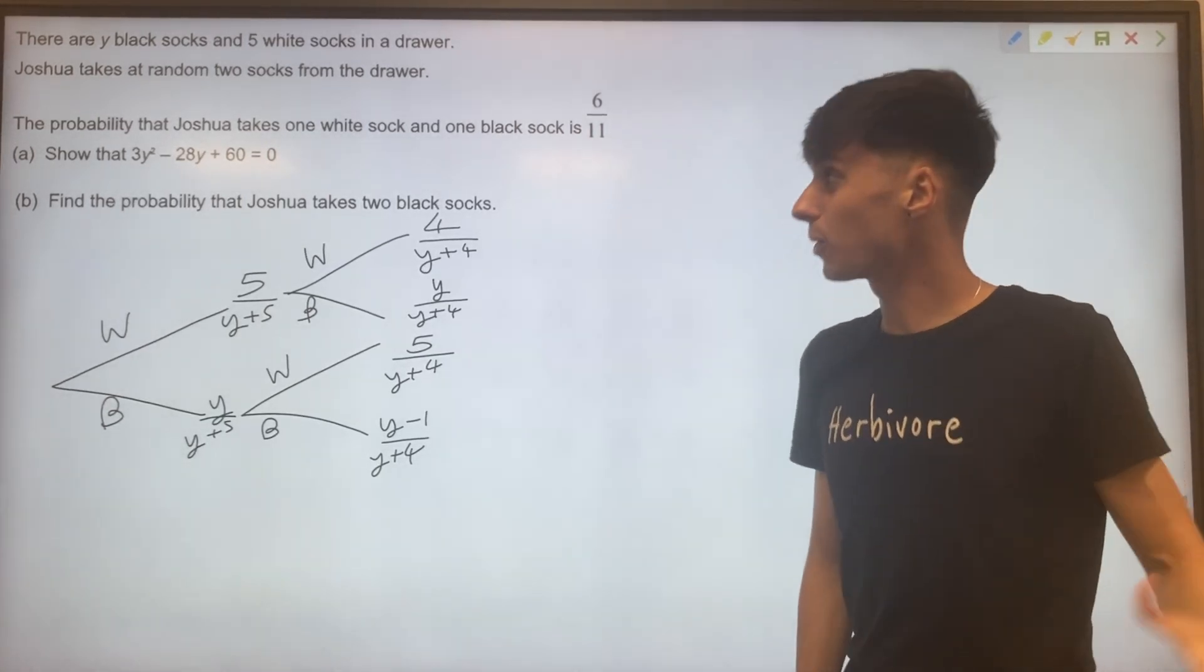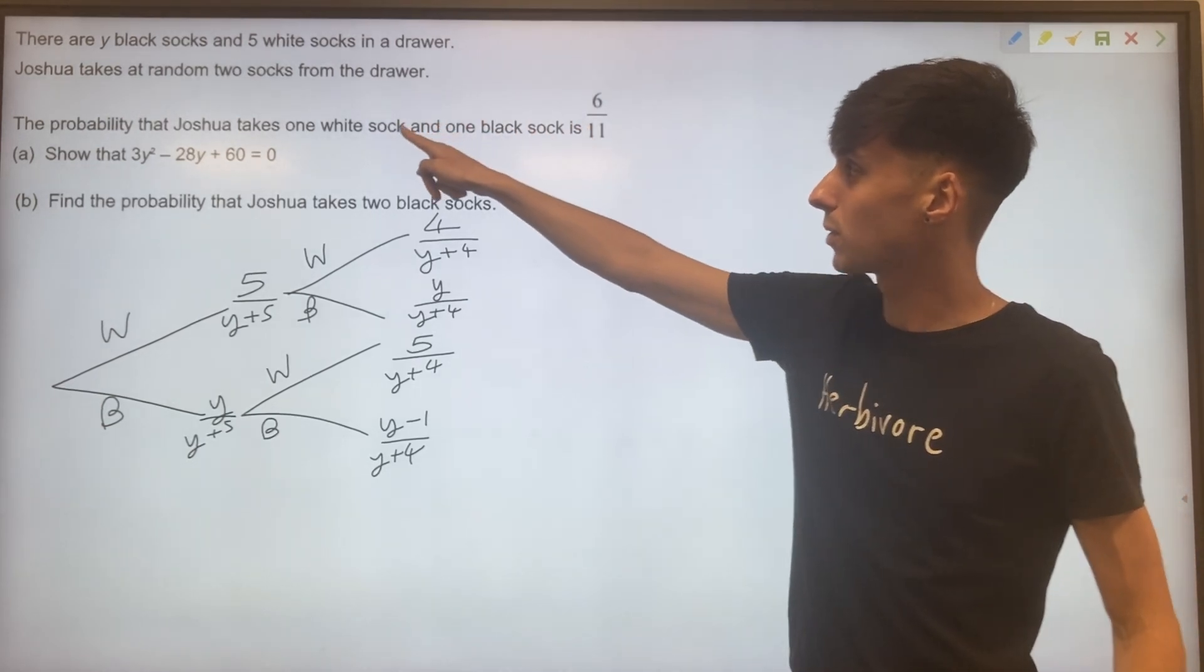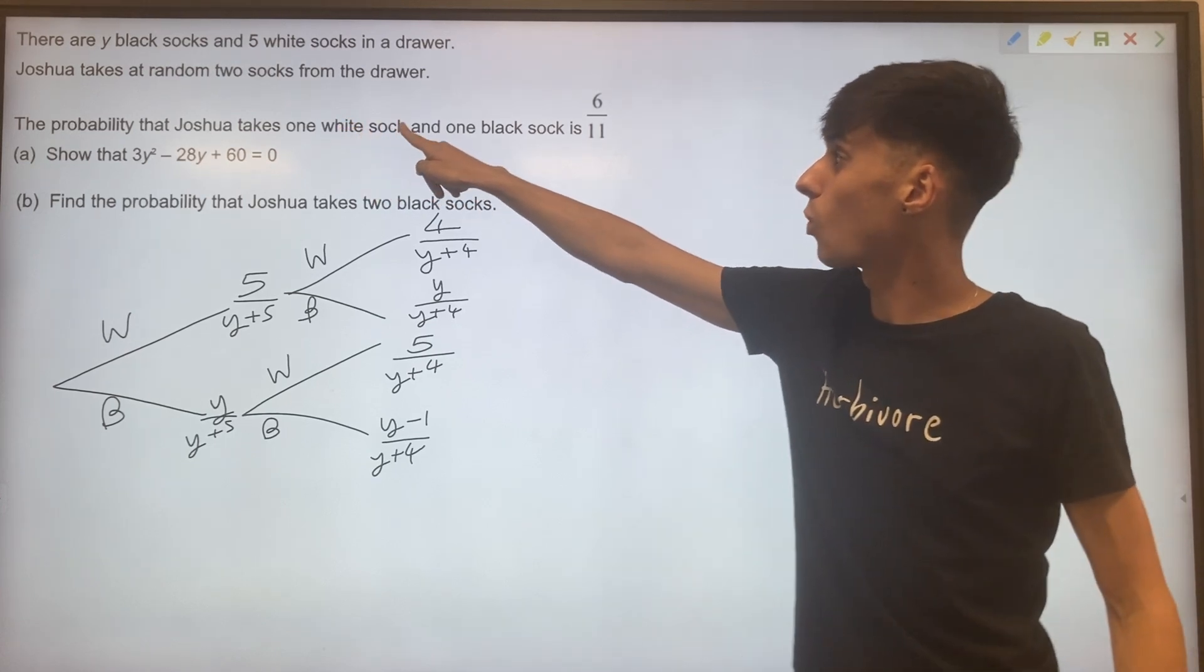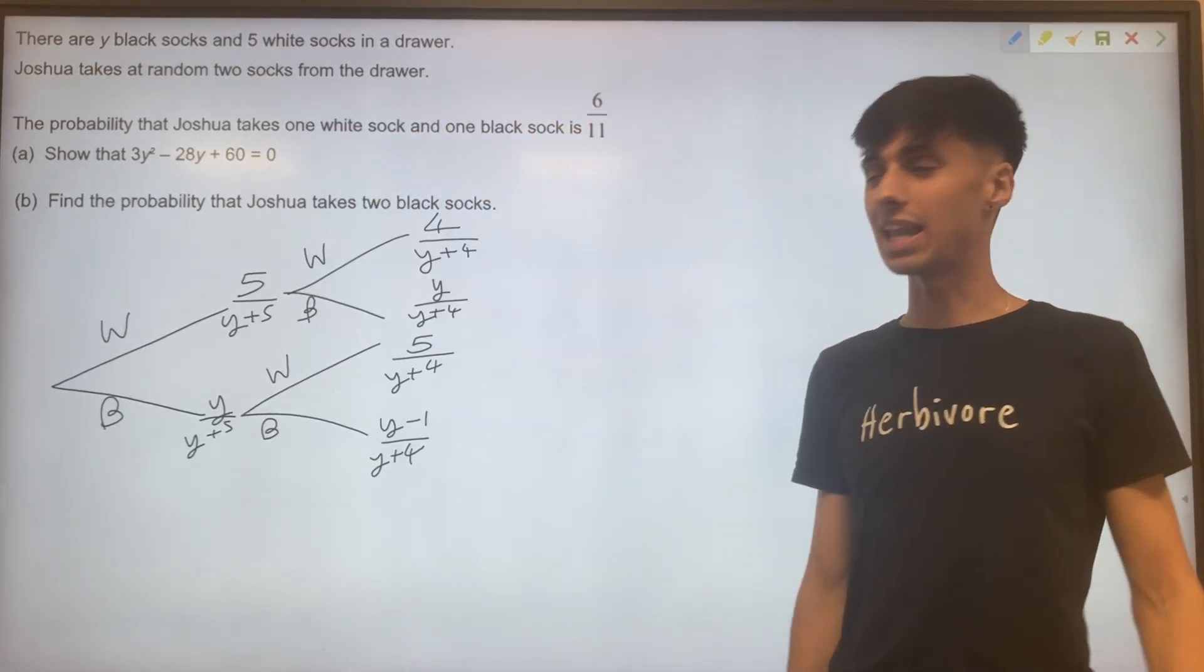Our tree diagram at this point is done. So we can move on to the probability part. We learned that Joshua, the probability that Joshua takes one white sock and one black sock, is six out of 11.